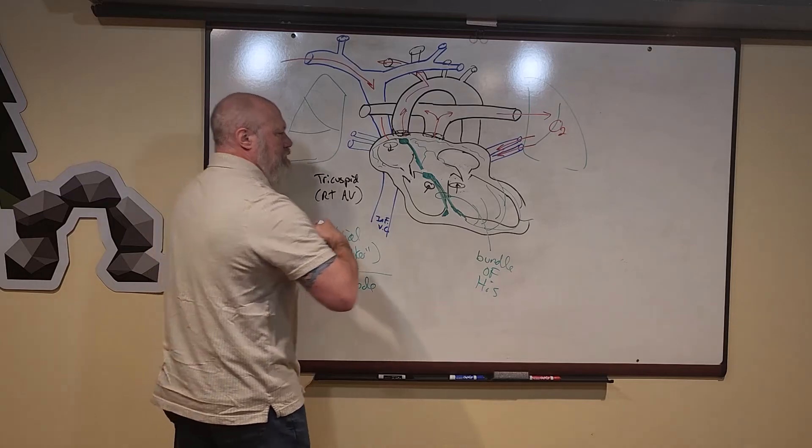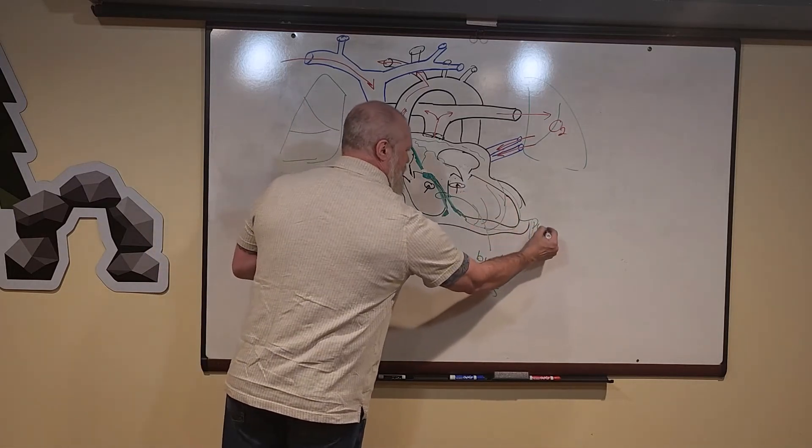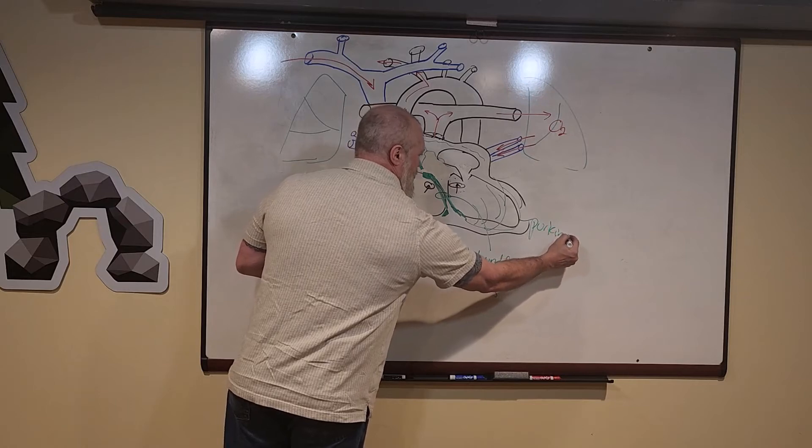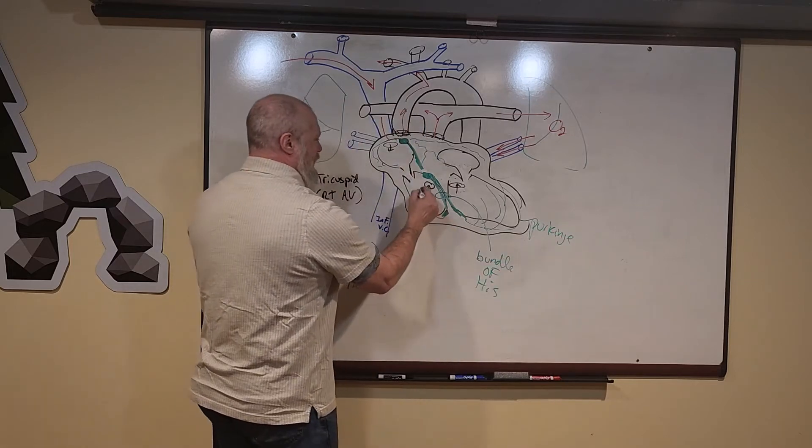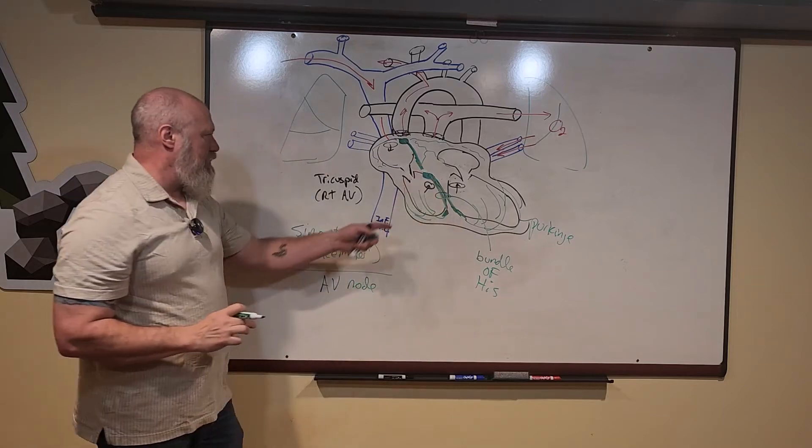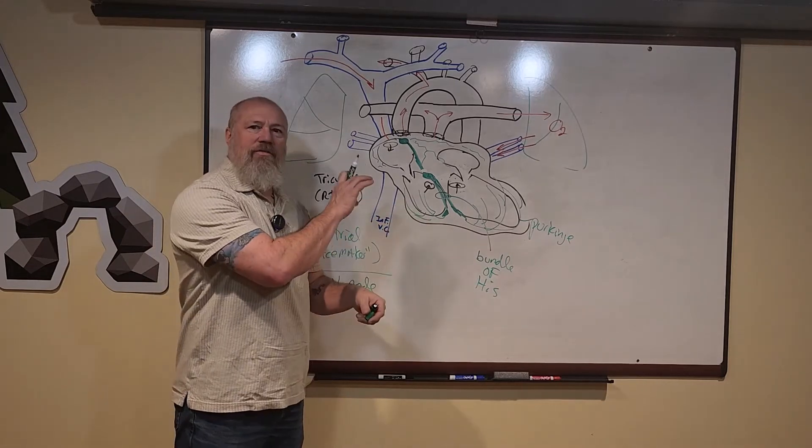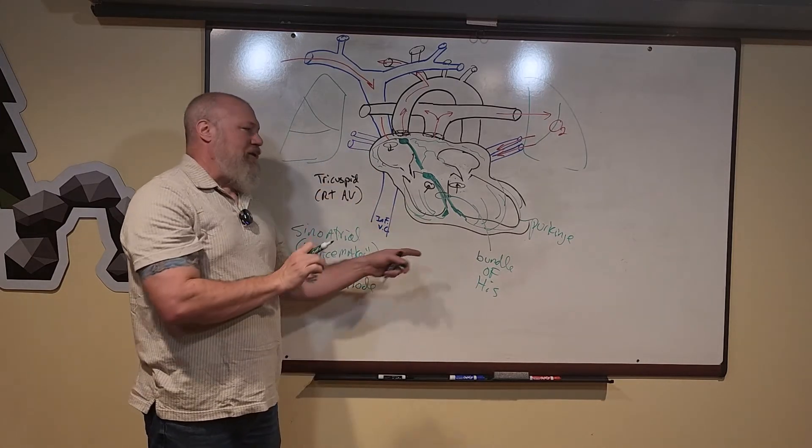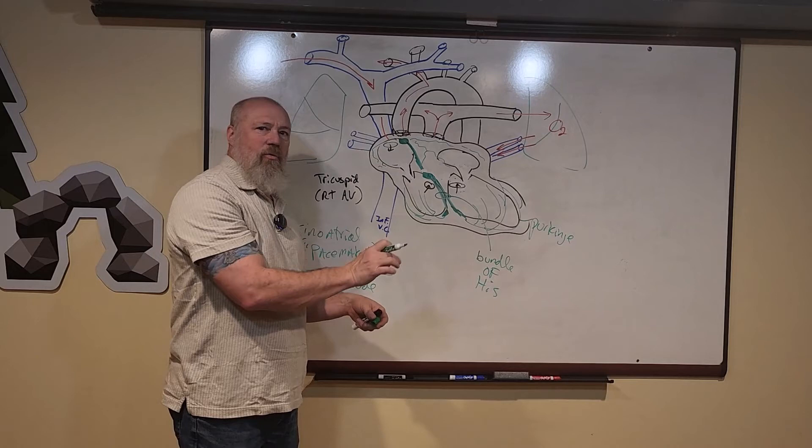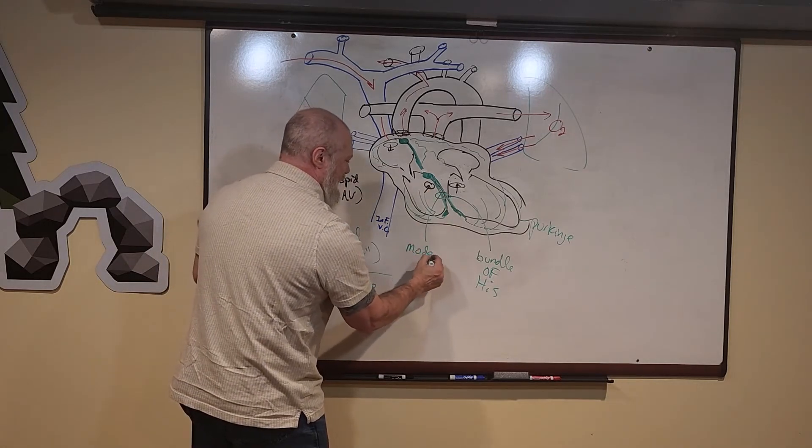On the right you've got some smaller Purkinje fibers. If you look at the internal architecture of the right ventricle, you can see the bundle of His or the AV fibers in the wall. When you look at that, that's sometimes called the moderator band or the septal marginal bundle.